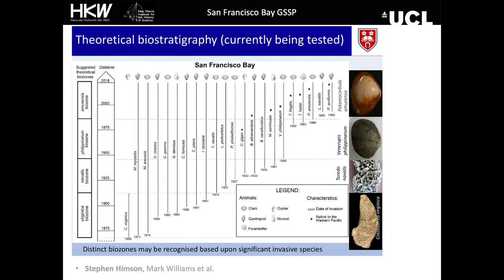This shows the theoretical stratigraphy of invasive species being investigated in the estuarine marine core from the south bay. The date line is shown on the left with the oldest at the bottom going upwards, and the range of species and their dates of first arrival shown going from left to right. This is a core collected and being analysed by Stephen Himson and Mark Williams at Leicester University in collaboration with the United States Geological Service. Because of the known historical records of invasive species of shellfish and foraminifera, the core is being investigated using a classic biostratigraphic approach for fossil zonation to date the sequence along with other independent dating methods.